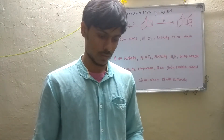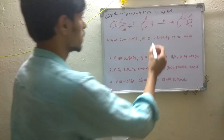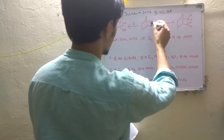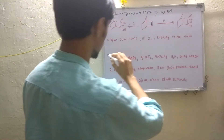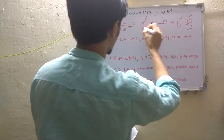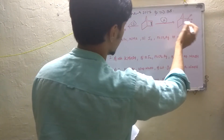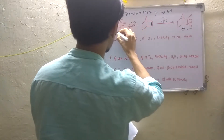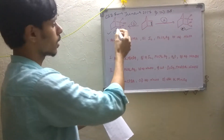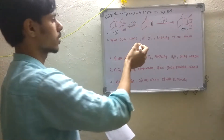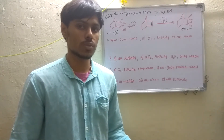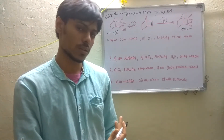Now let's start the question. The compound given is a bicyclic compound with a double bond — it is an alkene. Several reagents are given. By condition A we get one product, and by condition B we get another. In product A both hydroxyl groups are in the upward direction, and in product B both hydroxyl groups are in the downward direction. So in both cases, cis addition occurs — this is a question of dihydroxylation where cis hydroxylation occurs.